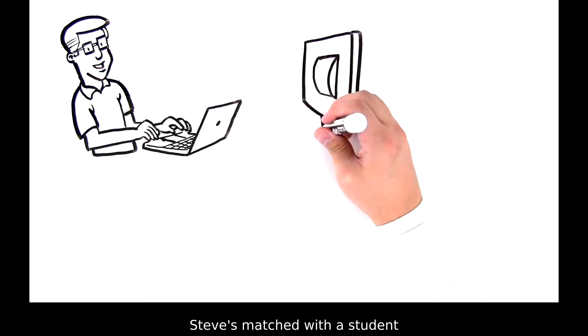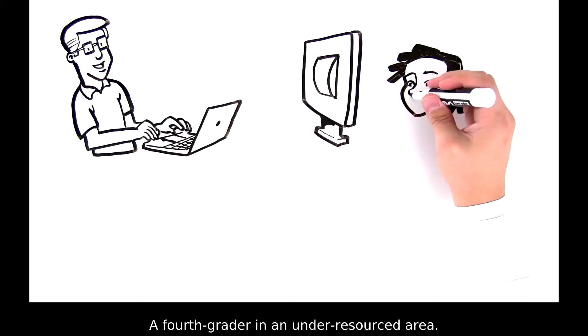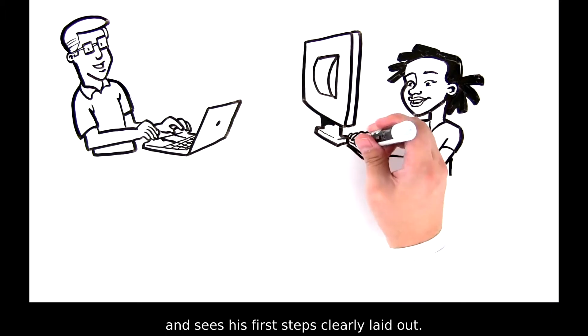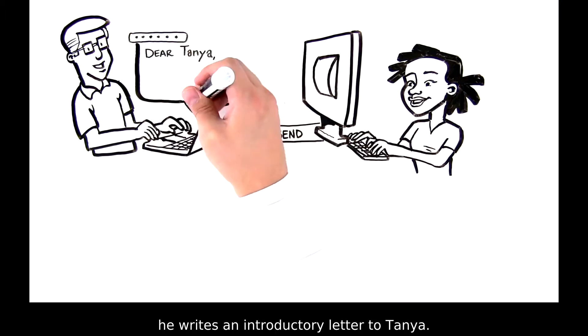Steve's matched with a student named Tanya, a fourth grader in an under-resourced area. Steve logs into the Try Engineering Together portal and sees his first steps clearly laid out. Using a provided template, he writes an introductory letter to Tanya.